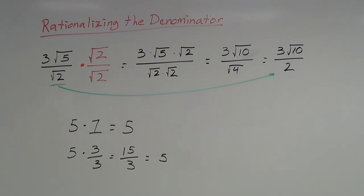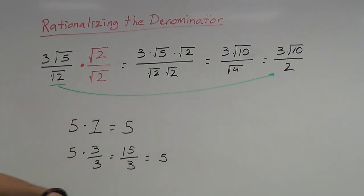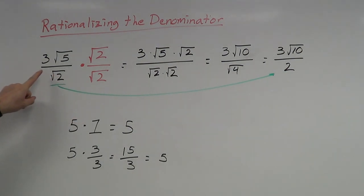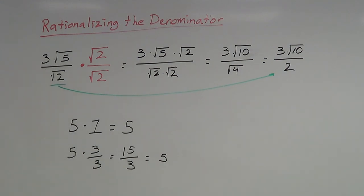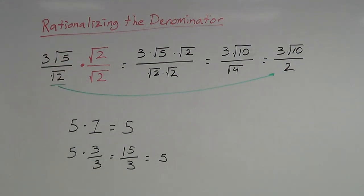One thing to note is that if you look at the bottom, you're always going to get a whole number when you multiply this way. I'll show more examples in a different video, but this process is going to work every time as long as you always use the number on the bottom that is causing us trouble. In this case, the square root of 2 is causing us trouble, so we multiply by the square root of 2 over 2.